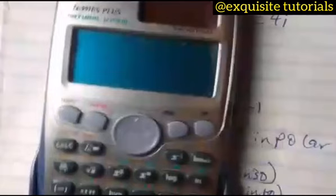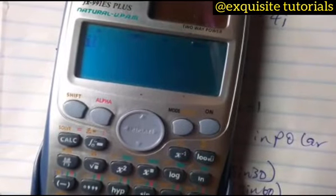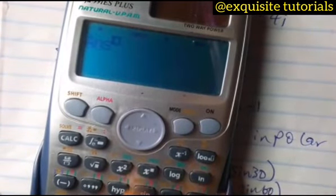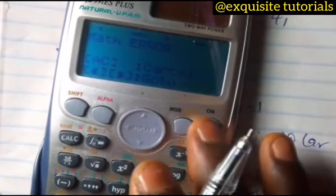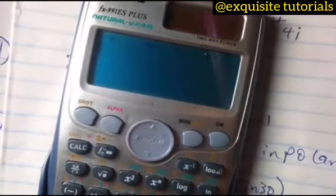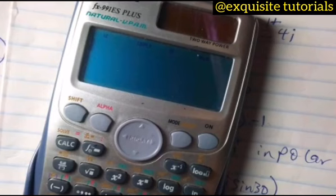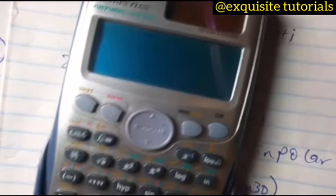For question two, given that this is the sum, simplify i to the power 80. As easy as that, press i, raise it to the power of 80. Math error, so you can't do that. You can't really do that except you convert it to polar form.